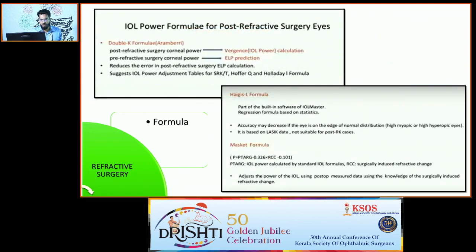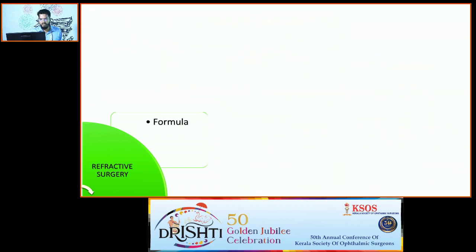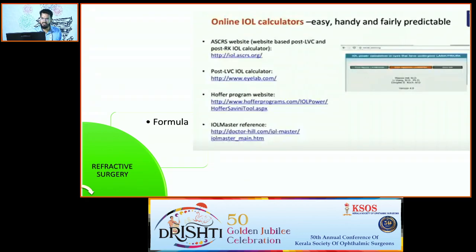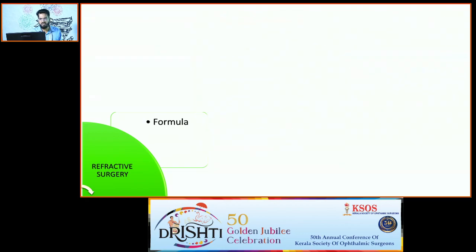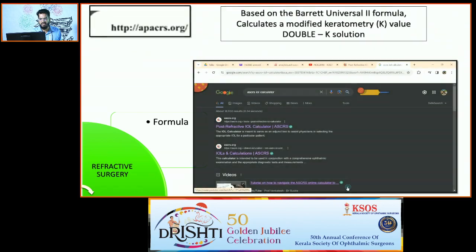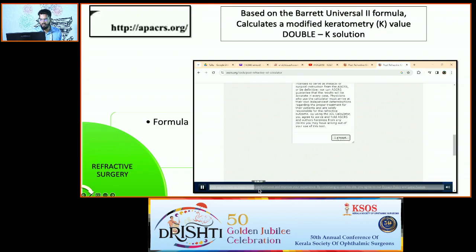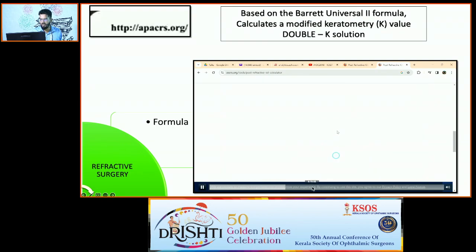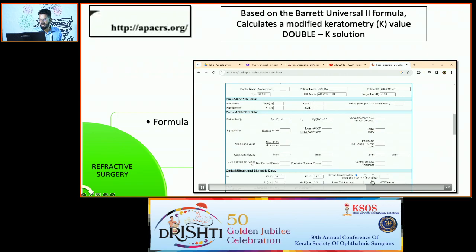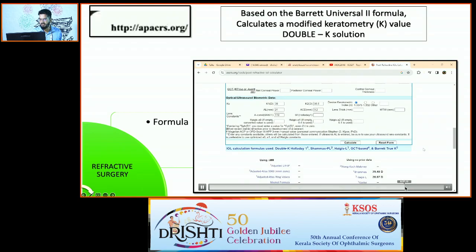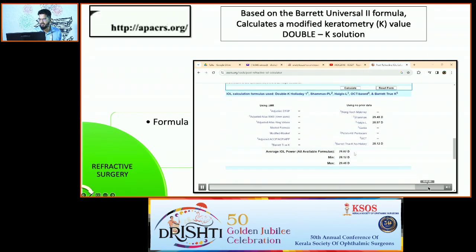There are many other formulas that can be used. The easy way out would be to use the ACRS calculator — a website where you enter the patient details and values, and the formulas are provided. You can then go for the average IOL power or the maximum.